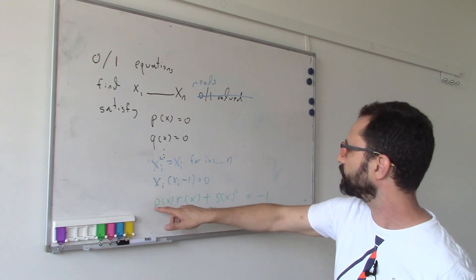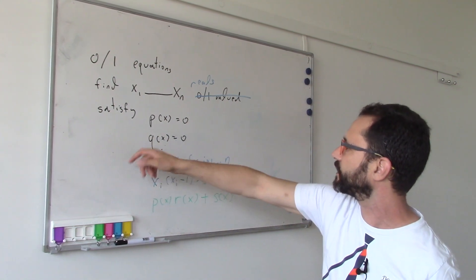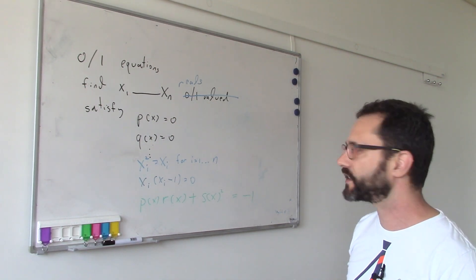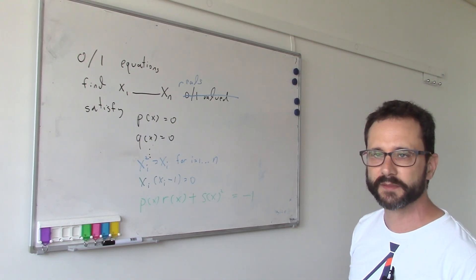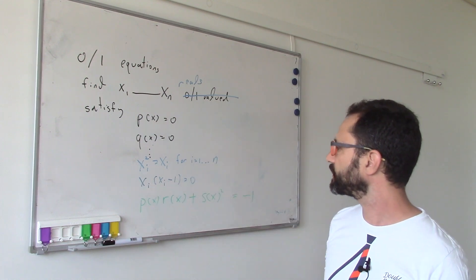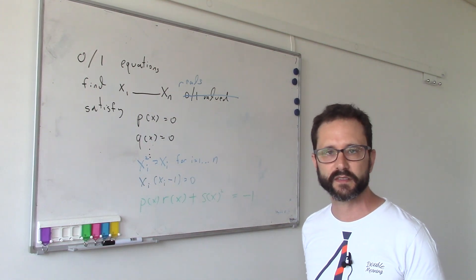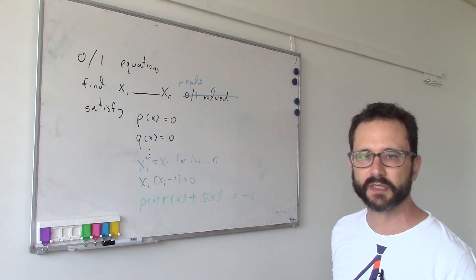And generally what you can do is - it's not just p(x), you can add q(x) and all the other equations - this is how you certify, using the principle that squares are always non-negative, that a certain set of equations is not satisfiable.